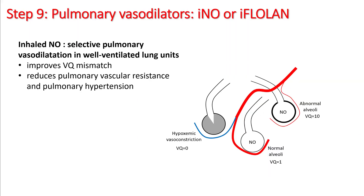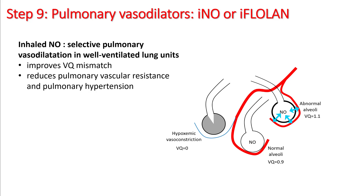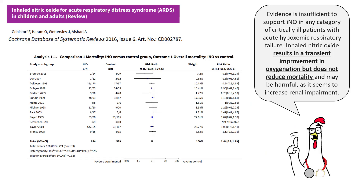Pulmonary vasodilators like inhaled nitric oxide and inhaled epoprostenol (flolan) can selectively vasodilate well-ventilated lung units and improve VQ mismatch. They also help reduce vascular resistance and pulmonary hypertension. For example, in an alveolus with good ventilation but poor perfusion, inhaled nitric oxide can increase perfusion to that area, allowing it to participate in oxygen exchange and improve VQ mismatch. However, there is currently insufficient evidence to recommend their routine use — they do result in transient improvement in oxygenation but do not reduce mortality.